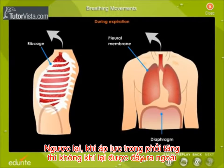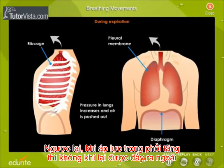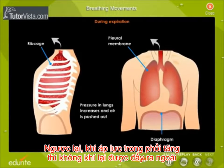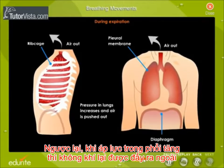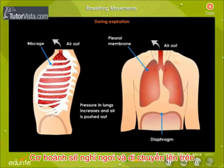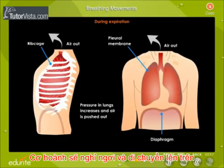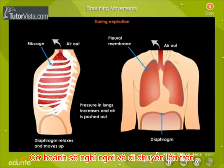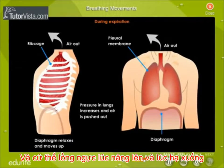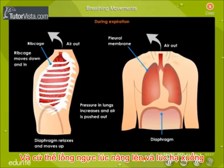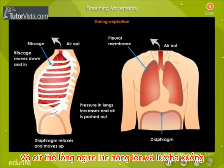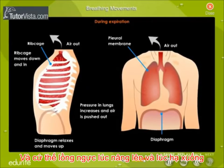Expiration: The pressure in the lungs is increased and the air is pushed out. The diaphragm becomes dome-shaped, relaxes, and moves up. Simultaneously, the ribcage moves down and in.